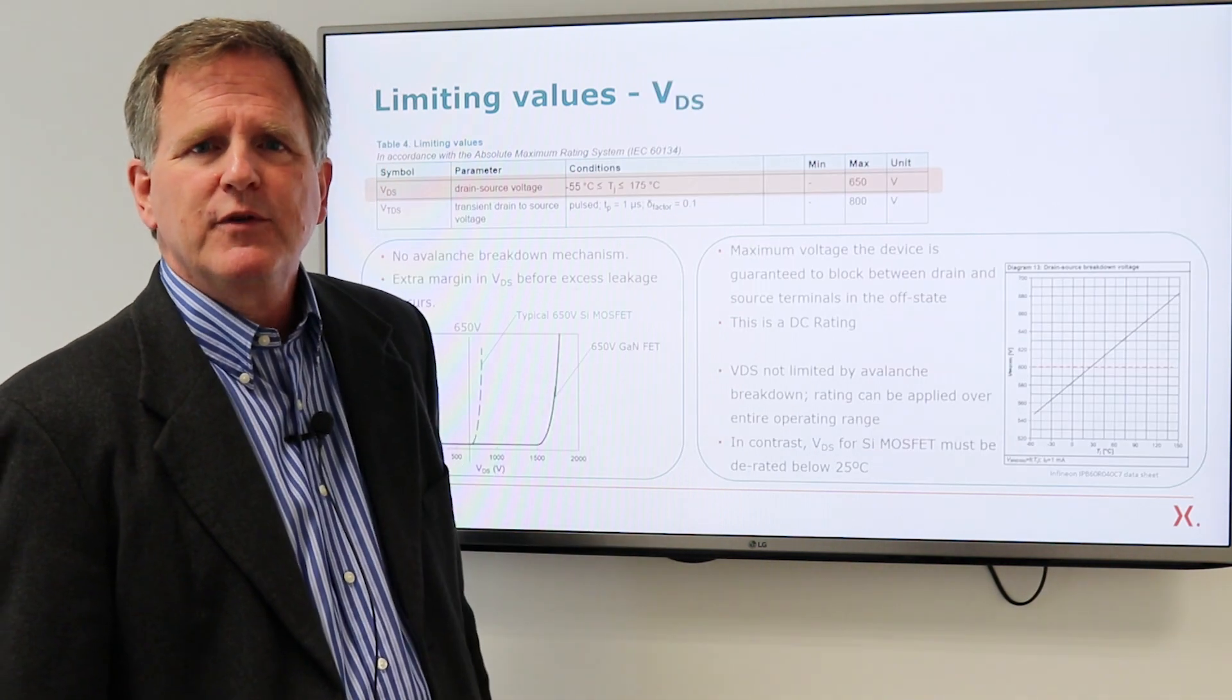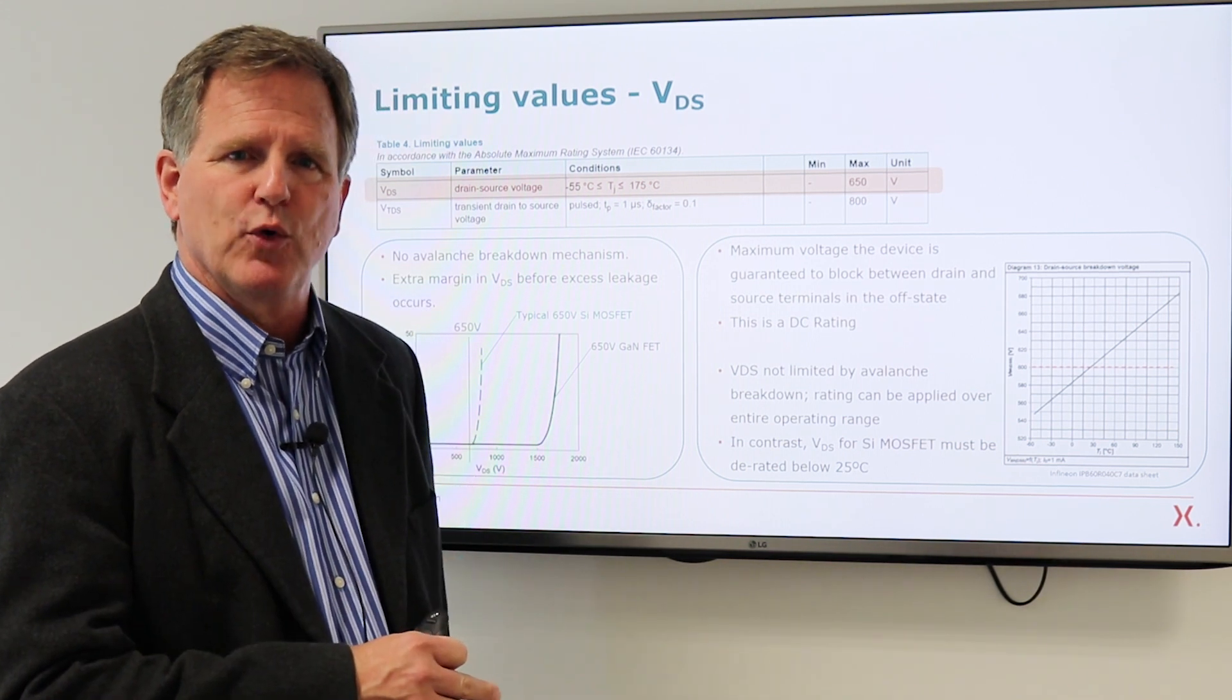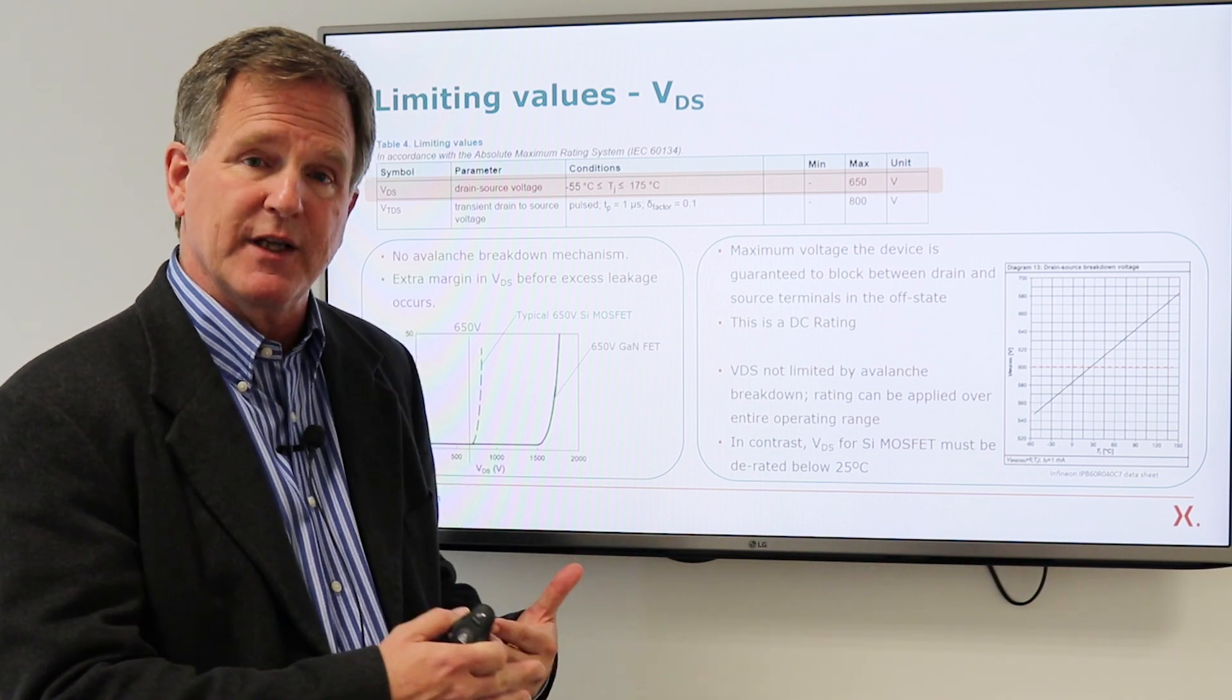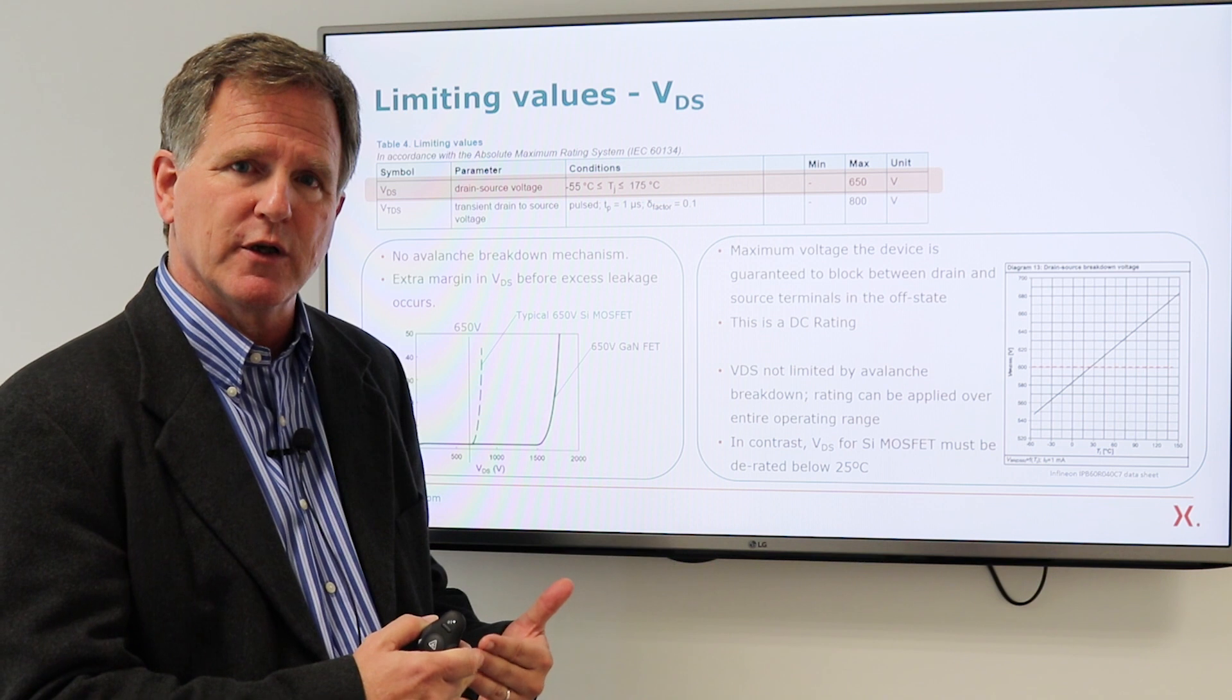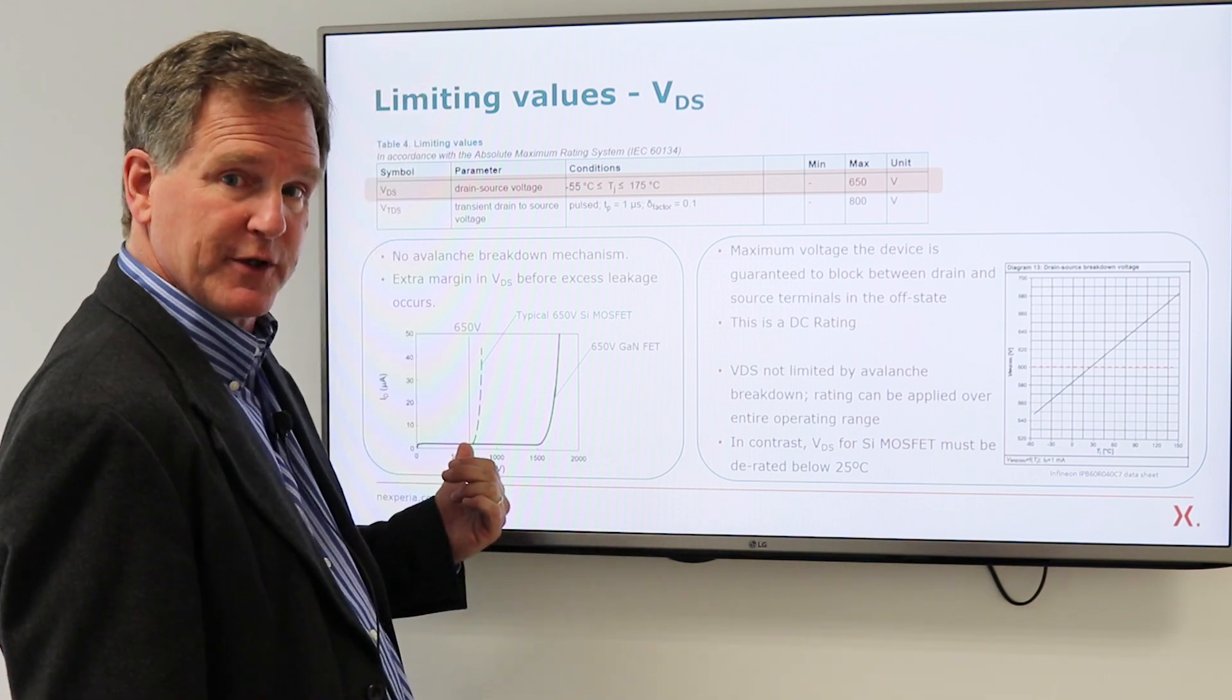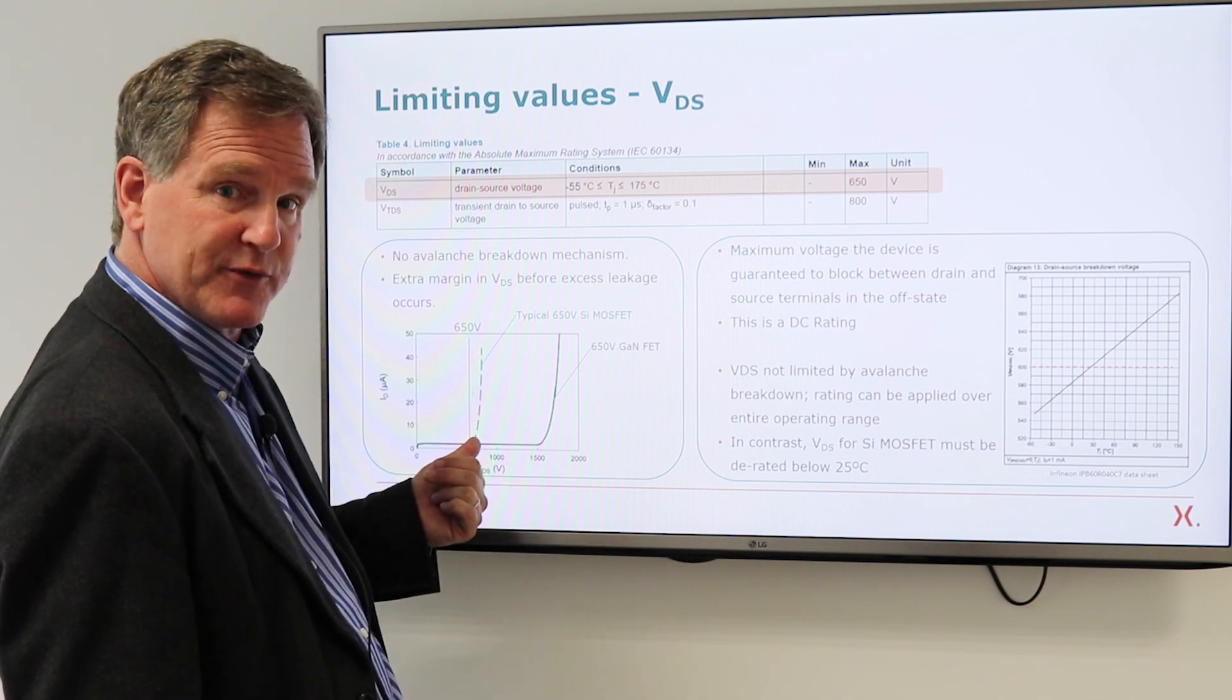Right off the bat we're going to give you one that has a new significance for GAN. This is the drain to source maximum voltage. Now with a silicon MOSFET, you're accustomed to thinking of an avalanche breakdown which will occur slightly beyond the DC rating. So here we're showing leakage current as a function of drain to source voltage. If it's rated at 650, something above 650,